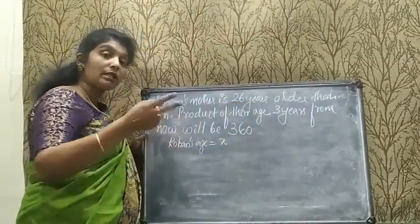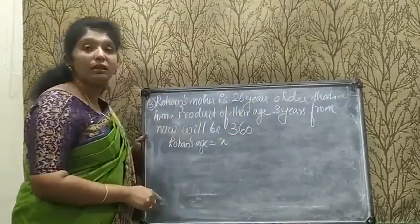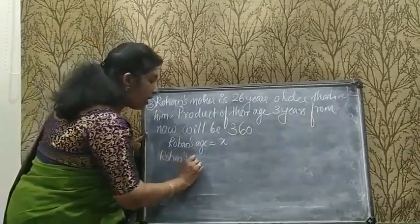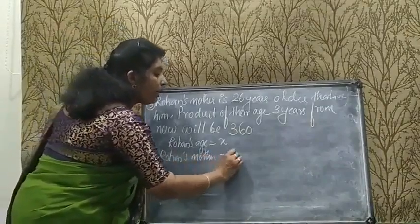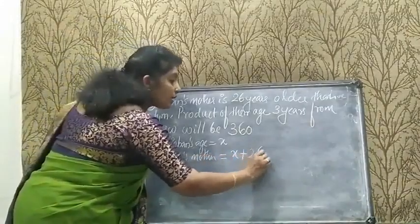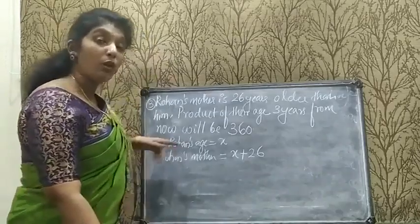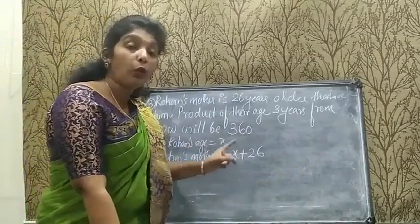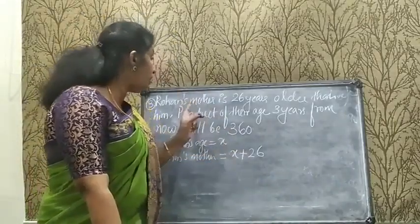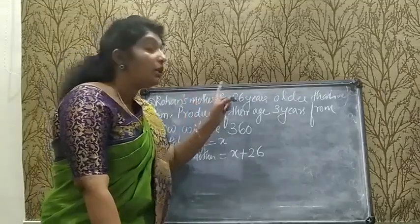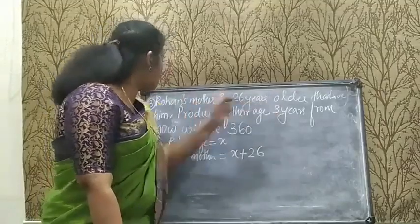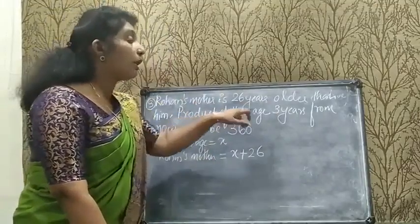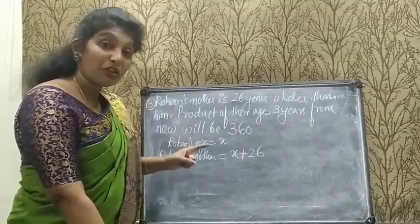Rohan's current age is not mentioned, so we assume Rohan's age as x. Since Rohan's mother is 26 years older than him, Rohan's mother's age will be x + 26. But we need the ages 3 years from now, so there is one more condition.